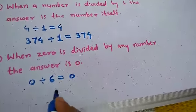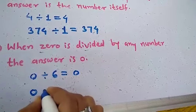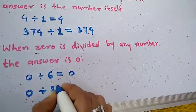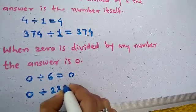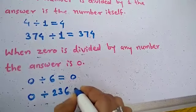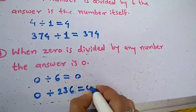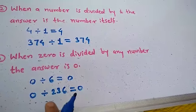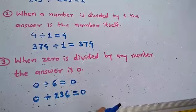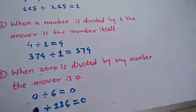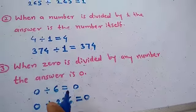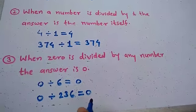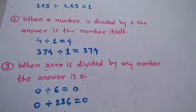Now next example: 0 divided by 236 is equal to 0. When 0 is divided by any number, the answer is 0. We divided 0 by any number, and the answer we got is 0. Thank you.